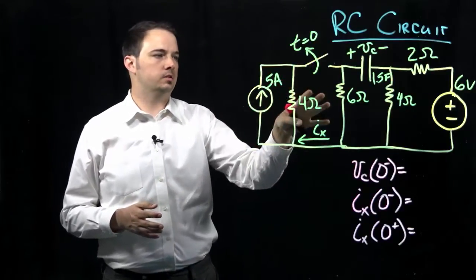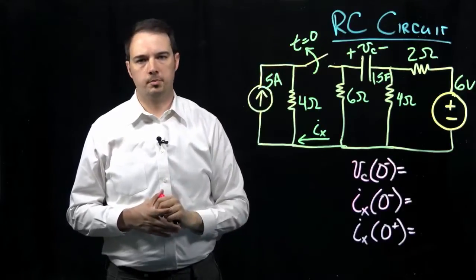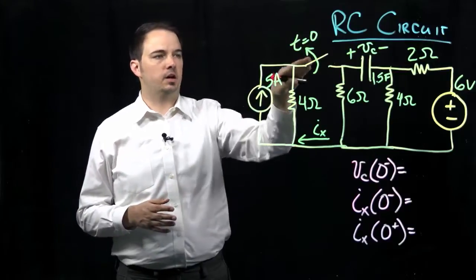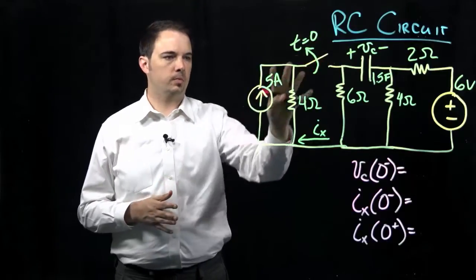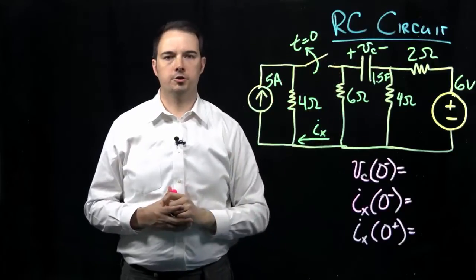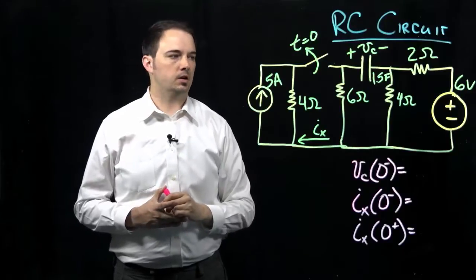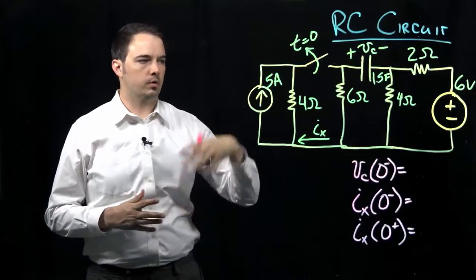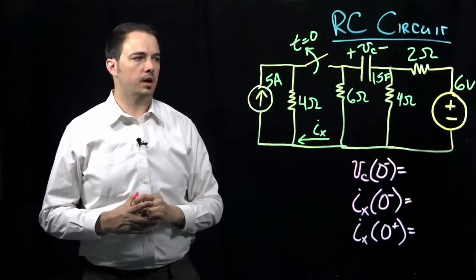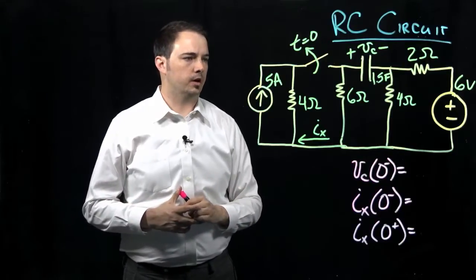This problem tells us that initially, at time t before zero, the switch is in the closed position, which defines our initial conditions. Then at time t equals zero, we open that switch, essentially disconnecting the source on that side. We want to ultimately find an expression for how voltage Vc changes with respect to time — evaluating the steady state final condition and using that to figure out the transient response through the exponential term.